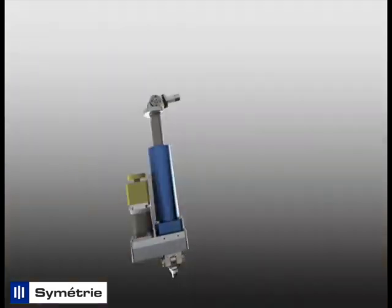The actuator consists of a fixed part, the body, and a mobile part, the shaft. The shaft is doing a translation in the body.